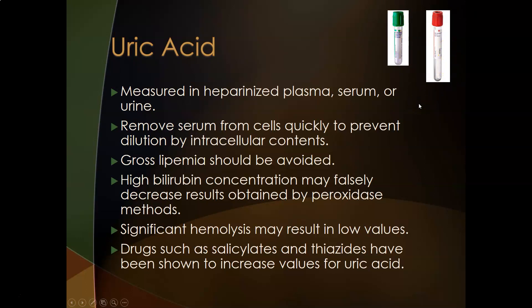Uric acid is usually measured in heparinized plasma (green top), serum (red top), or urine. You want to remove the serum or plasma from the cells quickly to prevent dilution by intracellular contents. Gross lipemia and high bilirubin (icterus) can falsely decrease results obtained by peroxidase methods. Significant hemolysis can also result in low values — so lipemic, icteric, or hemolyzed samples should not be used.